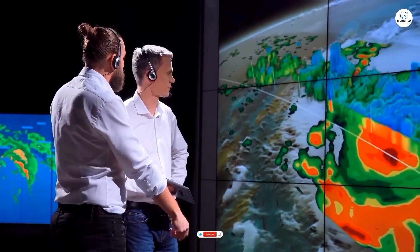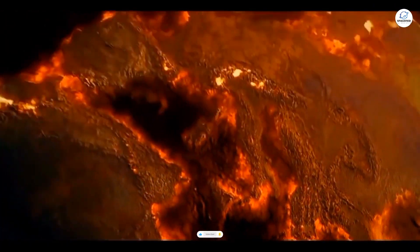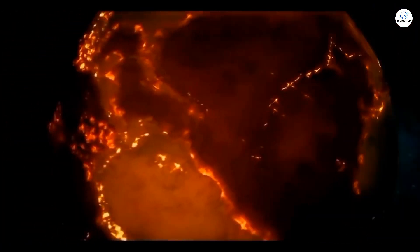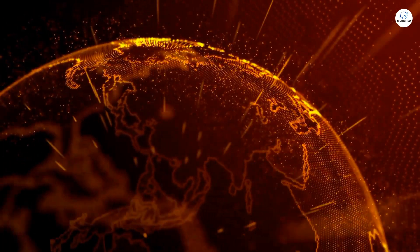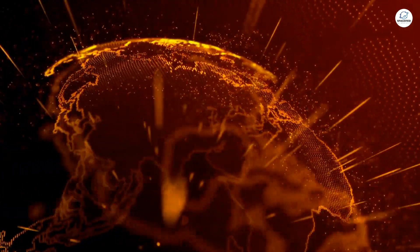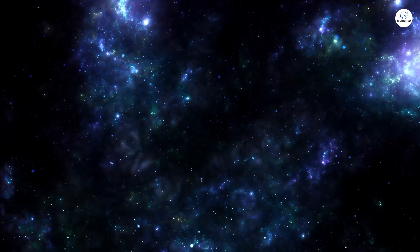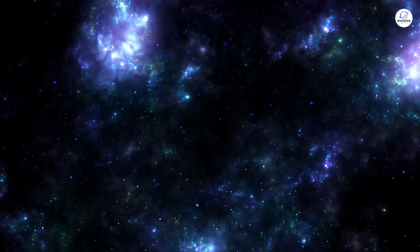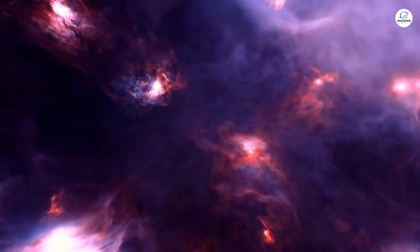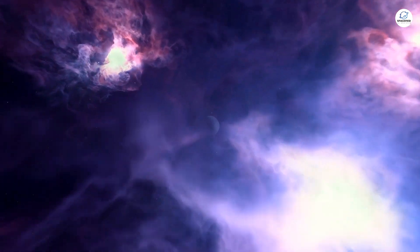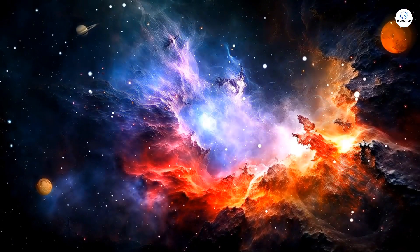Scientists are still trying to figure out how this planet manages to survive in such a hostile environment. Some theories suggest that it might have a magnetic field strong enough to deflect the worst of the radiation. Others think it could be protected by a thick layer of clouds, acting like a cosmic umbrella.